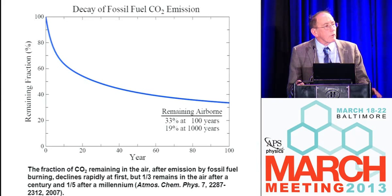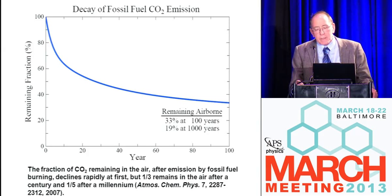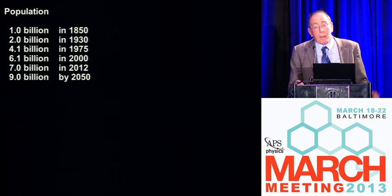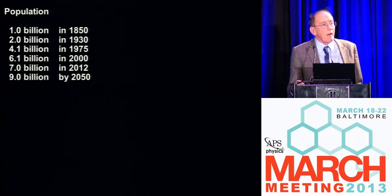If you're out 100 years, you still have 33% of that CO2. If you're out 1,000 years, you still have about 20%. Part of the driver here is our population, which has increased. It's kind of hard to get a handle on these numbers, but we'll have 219,000 more people at supper tonight than we had last night on this planet.